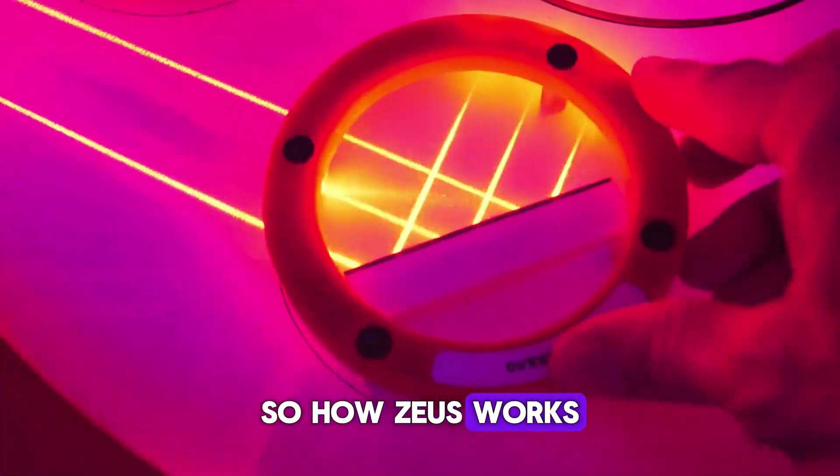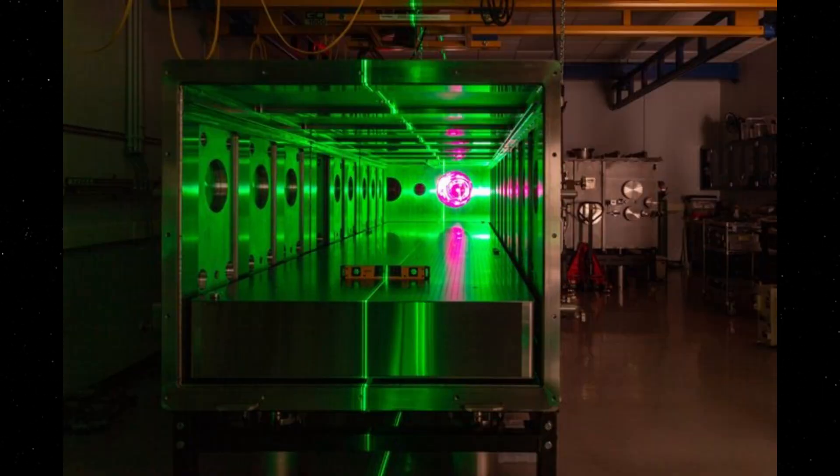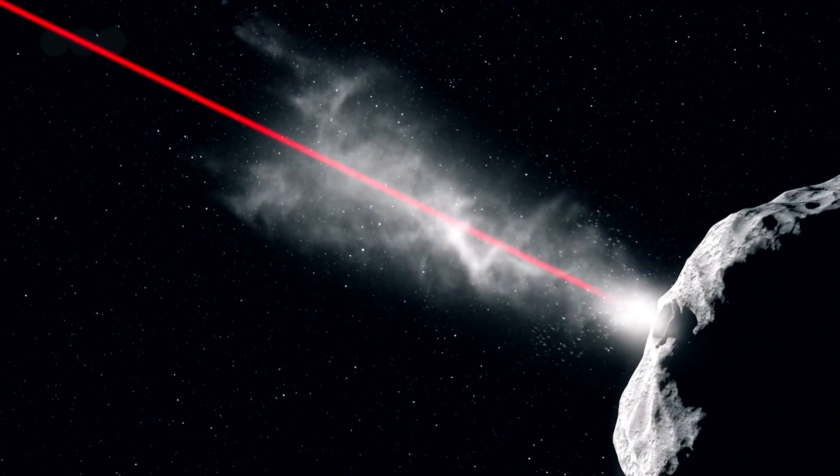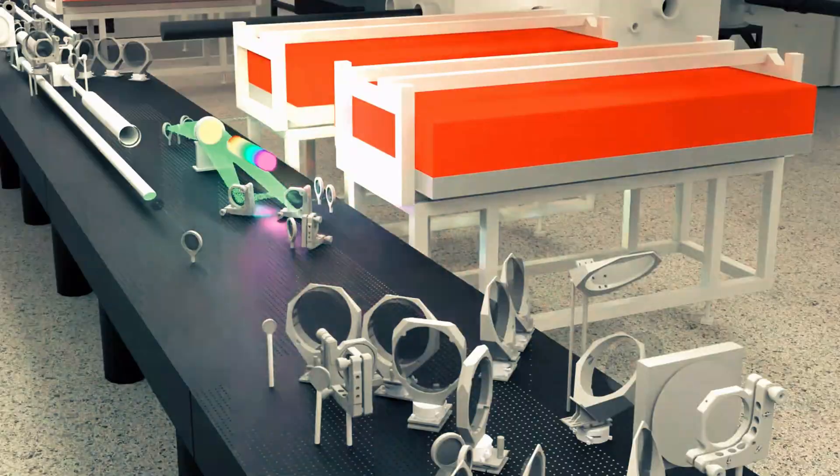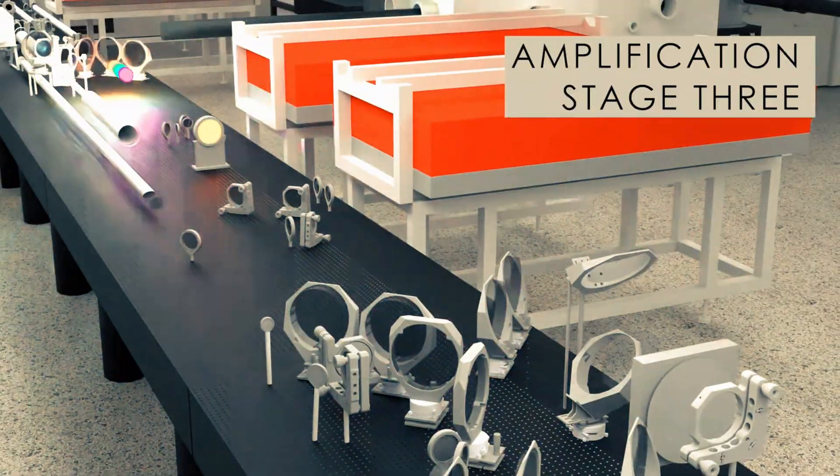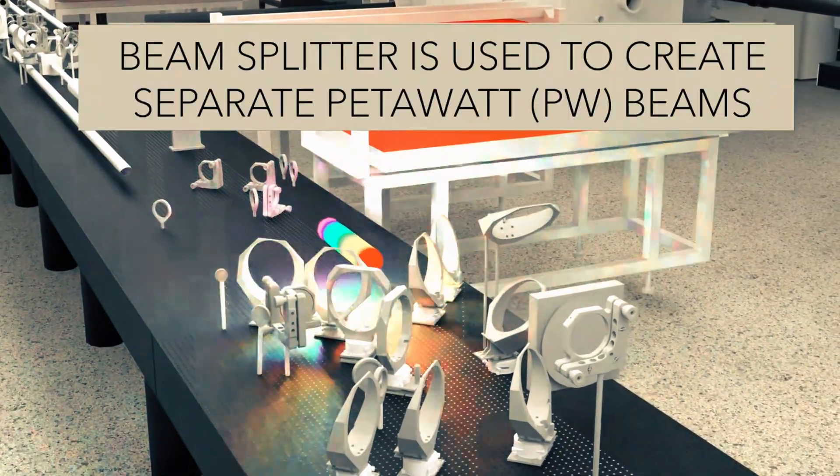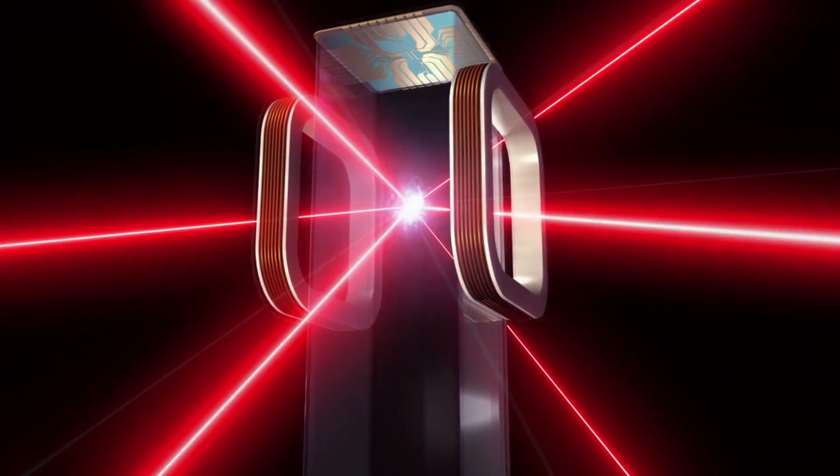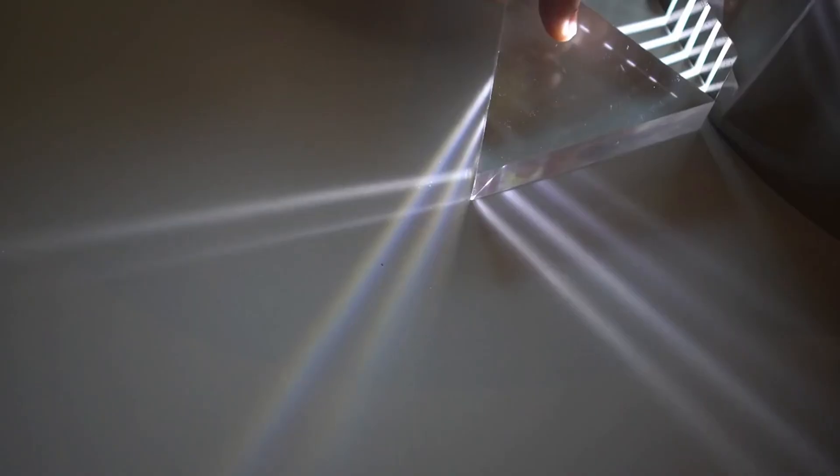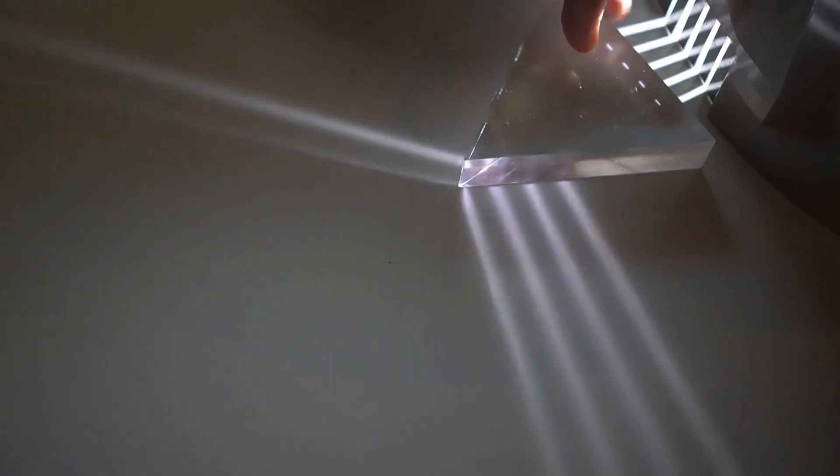So how does Zeus work? The heart of Zeus looks nothing like a science fiction laser cannon. It's a network of optical amplifiers, mirrors, and vacuum chambers, stretching across a lab filled with cool blue light and the hum of precise cooling systems. When the laser fires, it doesn't look dangerous. Just a flash, a pulse, and silence. But what happens inside that pulse is extraordinary.